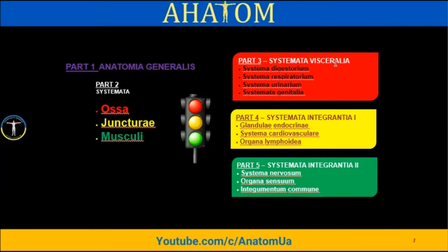The third part — visceral organs, or splanchnology — we are now finishing. It includes the digestive system, respiratory system, urinary system, and today we will finish the genital systems. After this, the next part will be the integral systems, which include endocrine glands, cardiovascular system, and lymphoid organs. The fifth part is the nervous system, sense organs, and integument — skin and breast.